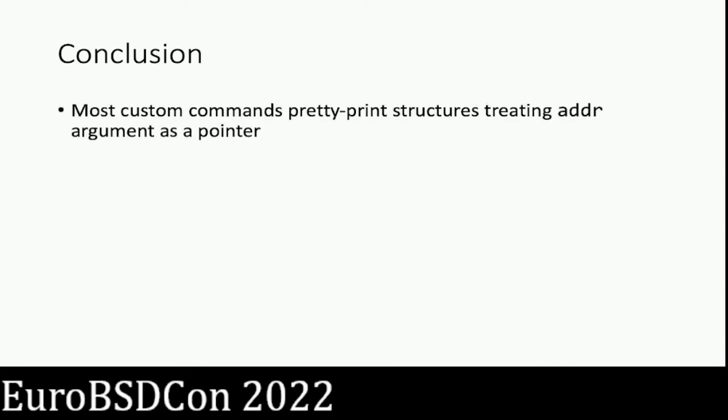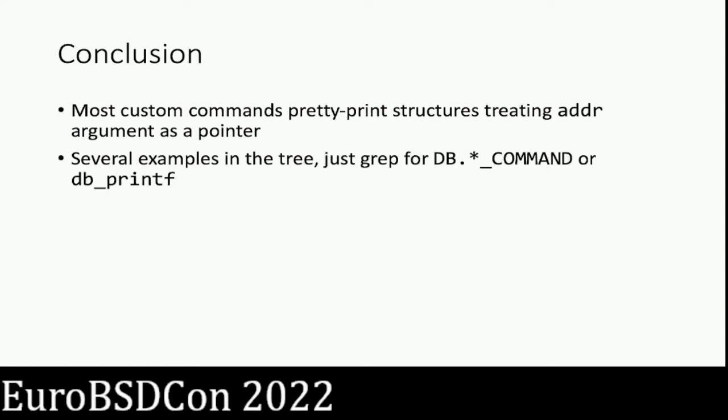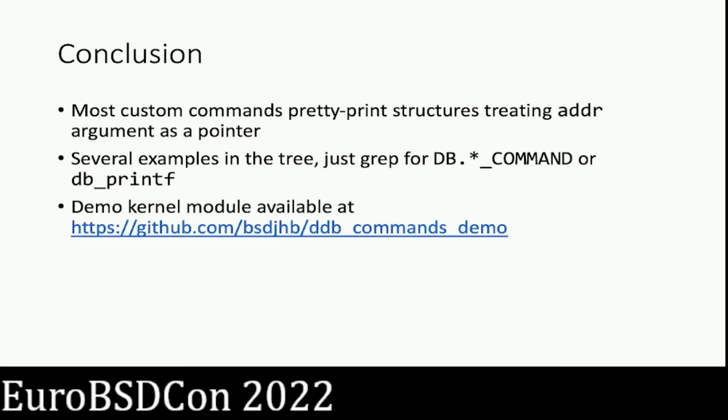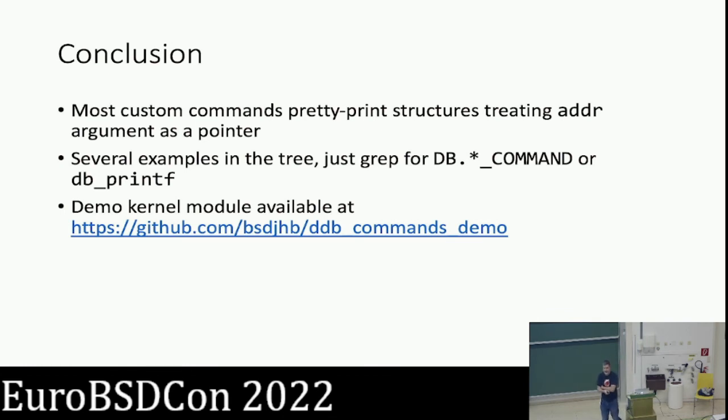In conclusion, most commands you'd want to write when actively developing with DDB are pretty printers — they take a pointer to a structure as the address argument and work with that. In some cases you may want to take some other token that's not an address, in which case you probably need CS_OWN. There are lots of examples in the tree — just grep for DB_COMMAND or db_printf to find commands doing all sorts of things. That's probably the best way to find patterns beyond these toys. The toys are available in a small GitHub repository.